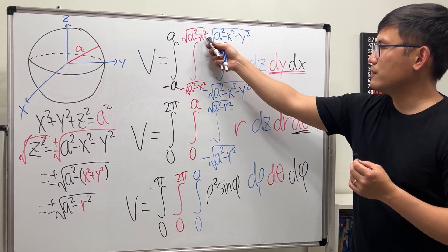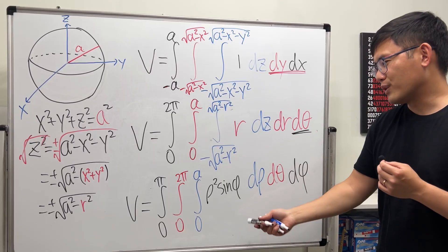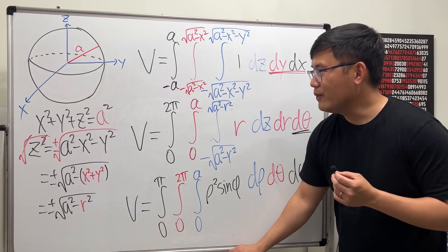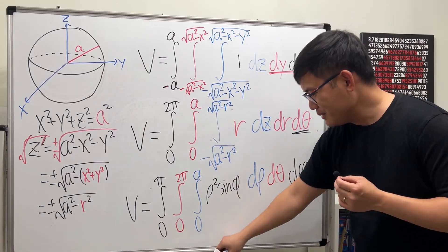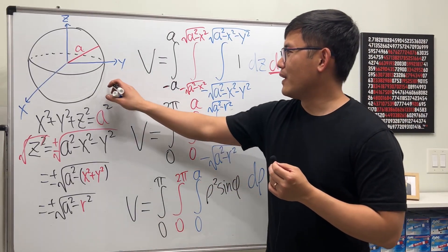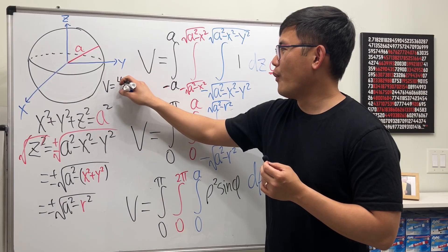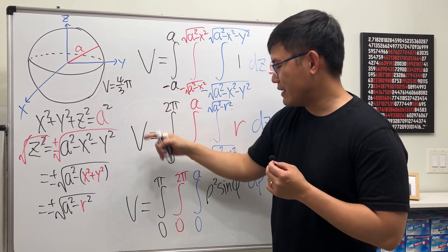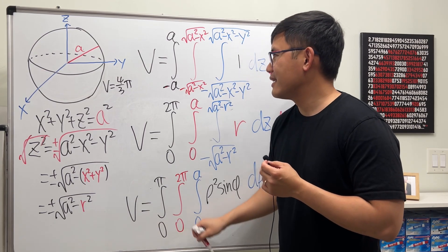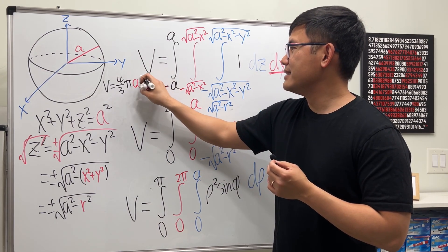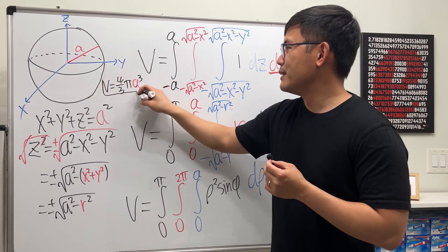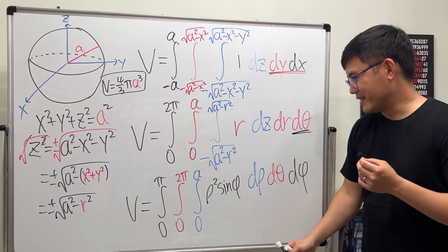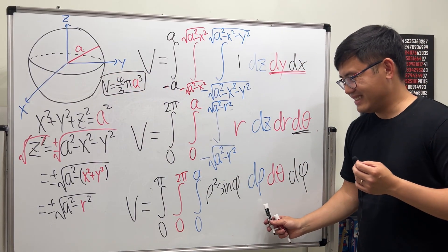Notice all three limits for ρ, θ, and φ are just constants — no functions involved. In cylindrical, some were functions, and in rectangular, many were functions of other variables. So spherical coordinates are clearly the easiest for this problem. If you work it all out, you get the volume equals 4/3 π a³. Try to work it out yourself!